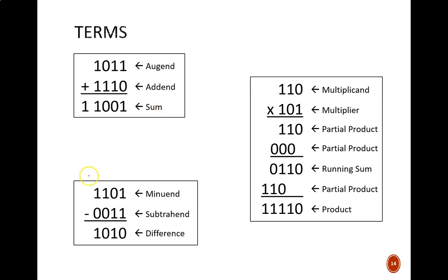When subtracting, the starting number is termed the minuend. The number that is being taken away from it is called the subtrahend, and we call the result the difference.